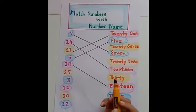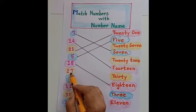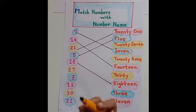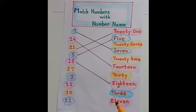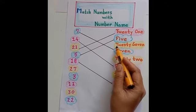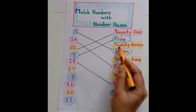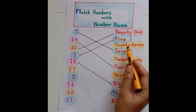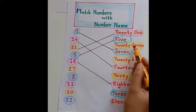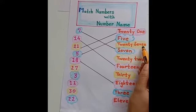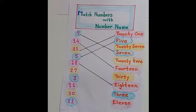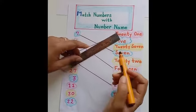Now next number is 27. Where is the number name for 27? Let's find out. Here - T-W-E-N-T-Y, 20, S-E-V-E-N, 7. 27. Let's match it.